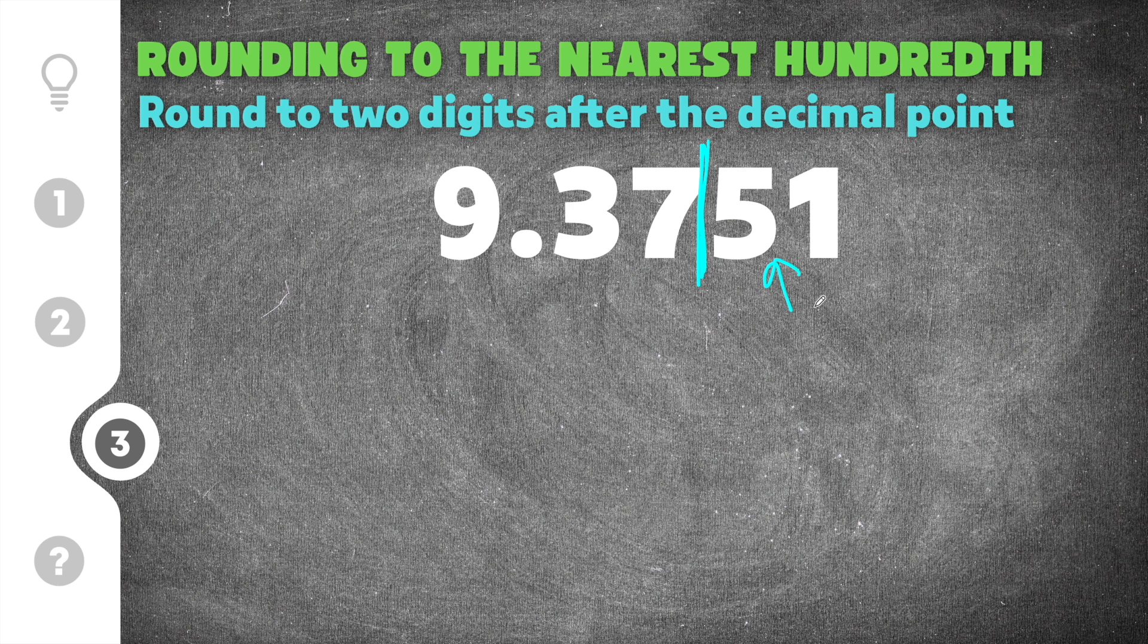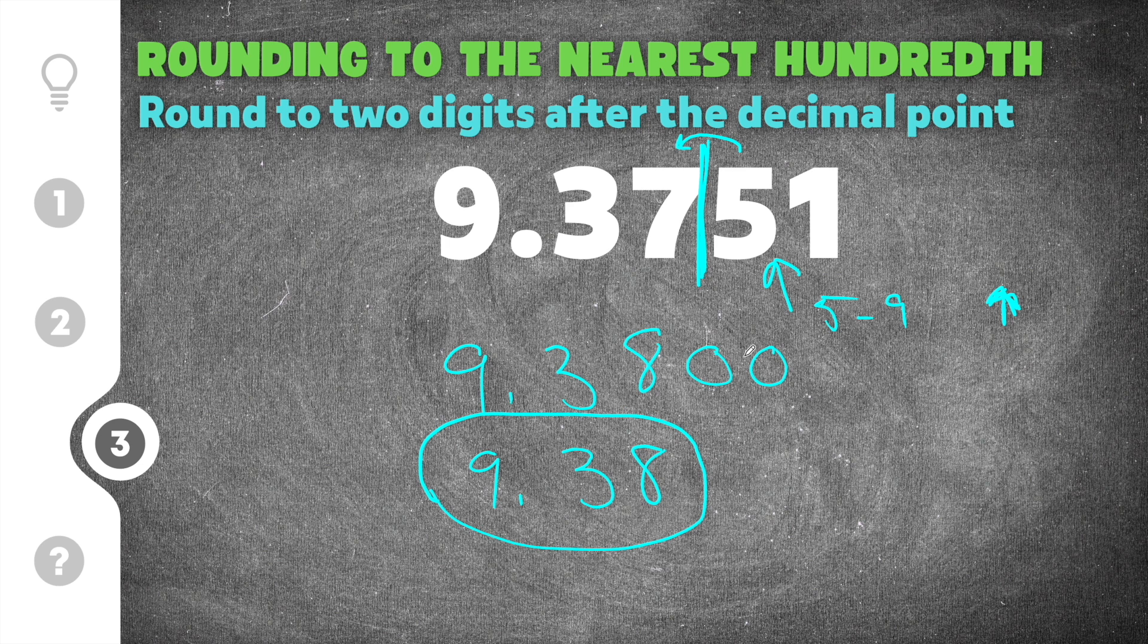So you're going to round up. Five to nine rounds up. With 9.3751, that five rounds the seven up to an eight. So it's 9.38. The zeros after represent nothing, so our solution is 9.38.